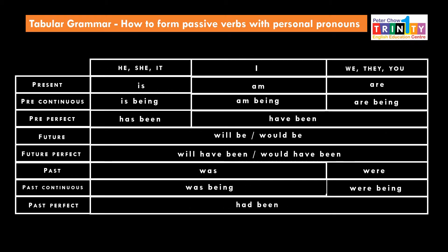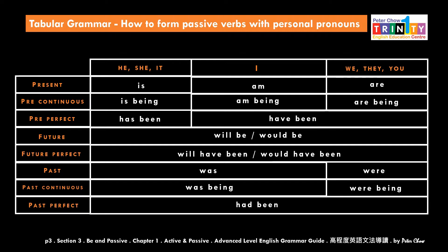When you use a verb, first you have to decide what tense it is going to be. For example, if the subject pronoun is I, choose 'am' if present tense is what you need. Then, to complete the passive verb, you have to use a past participle — a PP — the principal verb in a passive structure.